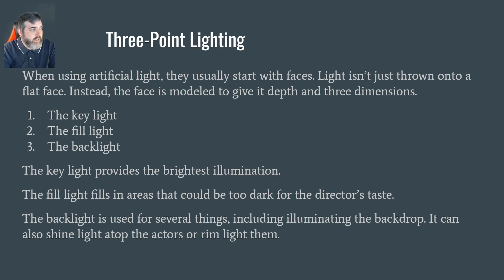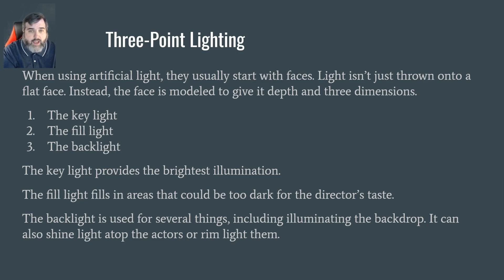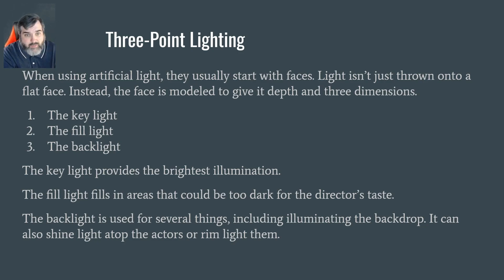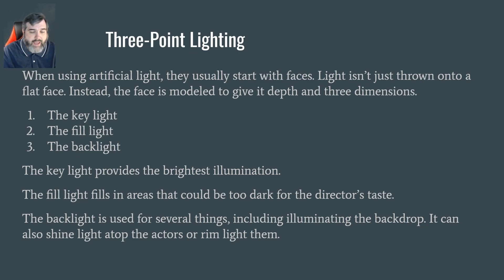When you use artificial light, they usually start with the face. The face of the figure is what we're really trying to look at — light isn't just thrown onto a flat face. There are three lights: the key light, the fill light, and the back light. The key light provides the brightest illumination. The fill light fills in areas that could be too dark. And the backlight is used for several things, including illuminating the background.